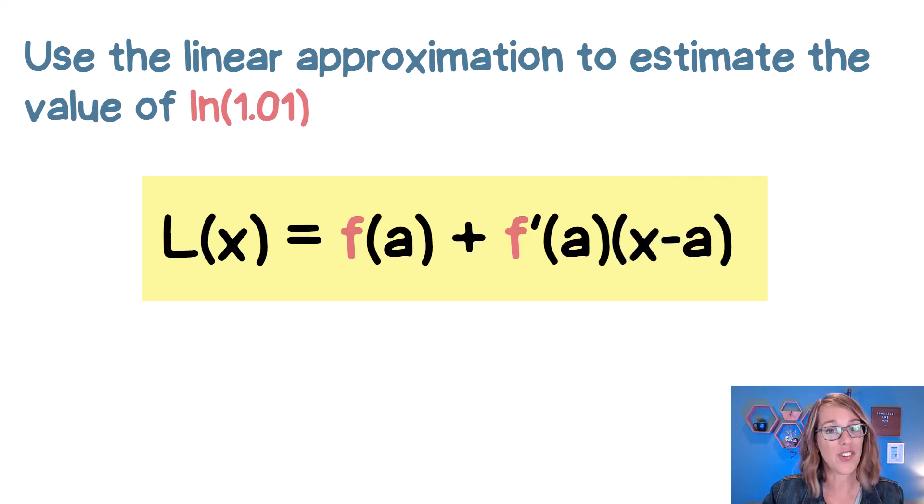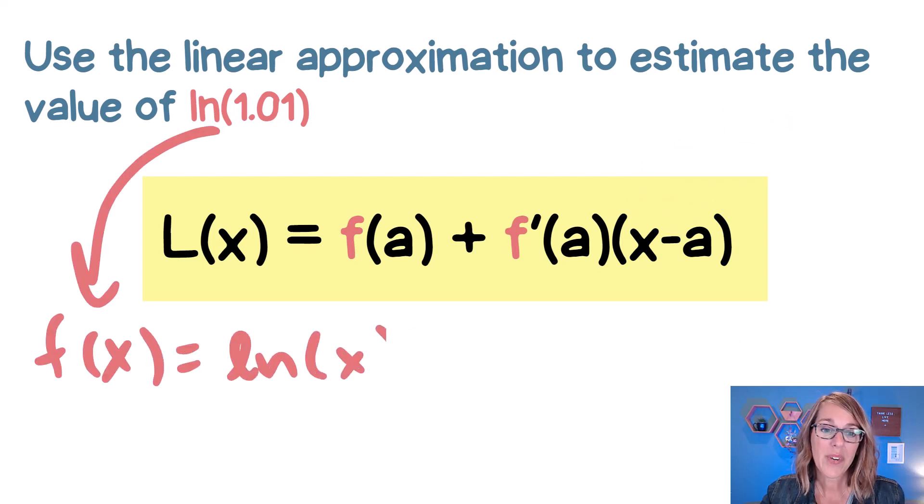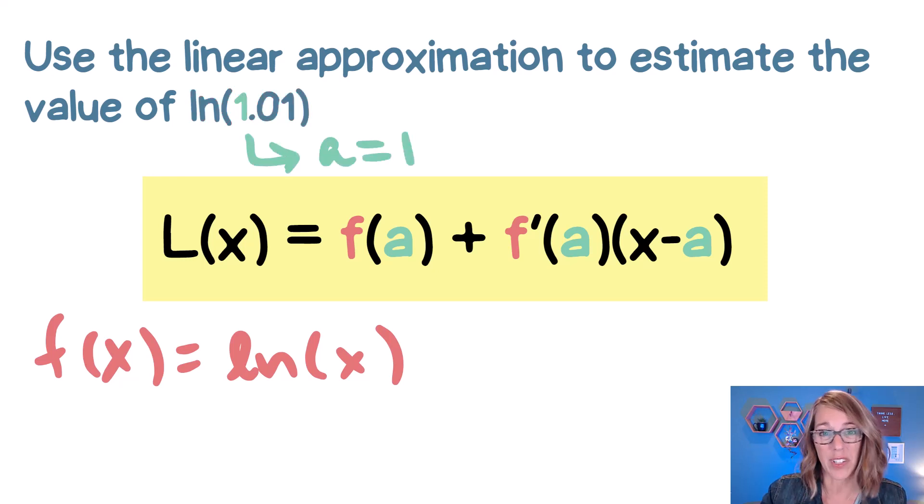We need to know the function that we're dealing with, and that is that natural logarithm. We also need to know this value A. This is going to be the point of tangency. It's also called the center point for the linearization, but it's where we're going to put this tangent line down. And that's the nice number inside of our function. That's going to be the number 1 because the natural log of 1 is 0. Super easy to compute.